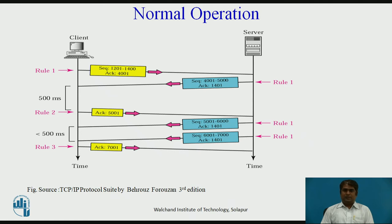The client cannot delay the acknowledgement forever. When the next segment arrives, another ACK delaying timer is set. However, before it matures, the third segment arrives. The arrival of the third segment triggers another acknowledgement based on rule 3.